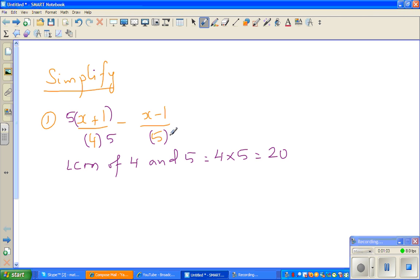Here, to make this 20, I have to multiply by 4. So I have to multiply this by 4. So this becomes, I will write this in the bracket. So this is 5x plus 5 over 20 minus 4x minus 4 over 20.